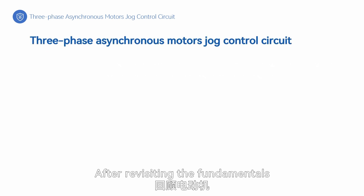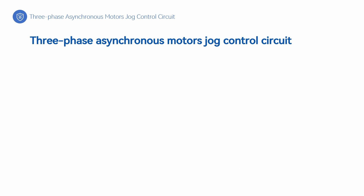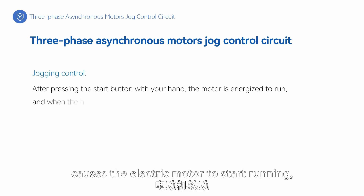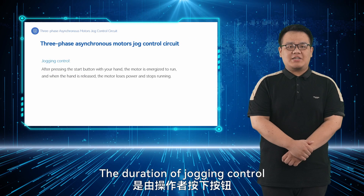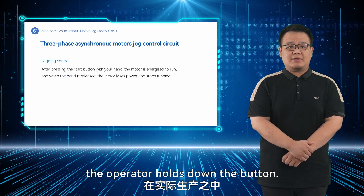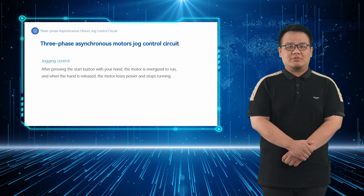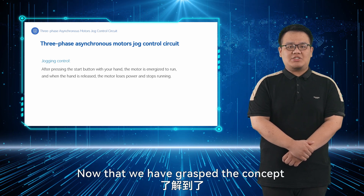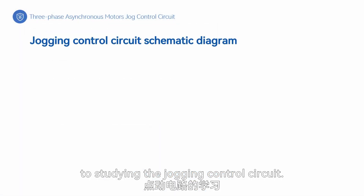After revisiting the fundamentals of electric motors, let's begin by understanding the concept of jogging control. Jogging control refers to a scenario where pressing a start button causes the electric motor to start running, and when you release the button, the motor stops. The duration of jogging control is determined by the length of time the operator holds down the button. In practical industrial applications, there are instances where manual intervention is required. Now that we have grasped the concept of jogging control, let's move on to studying the jogging control circuit.